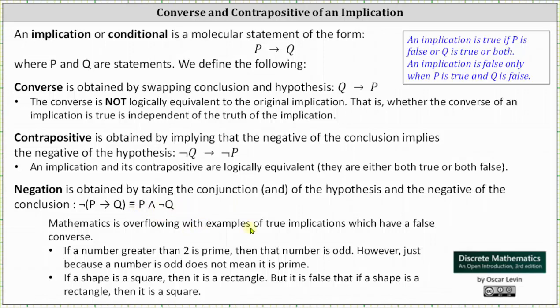Mathematics is overflowing with examples of true implications which have a false converse. Here are two examples. The implication if a number greater than 2 is prime then the number is odd is true. However, the converse is false.